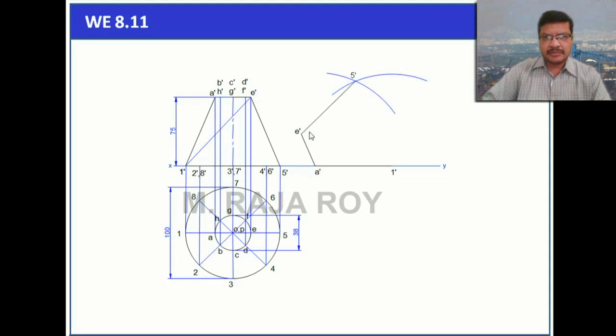Now join the E dash, 5 dash and 5 dash, 1 dash points. You get the same shape here. Now join this midpoint and this midpoint and this midpoint and take these lengths and mark all those lengths here. This is the total reconstruction.